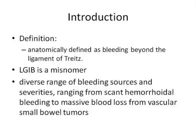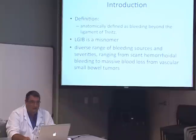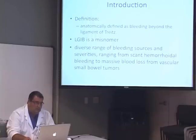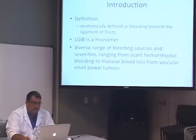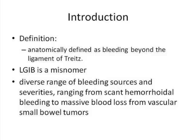The first thing is defining what persistent lower GI bleeding is. Lower GI bleed is anatomically defined as bleeding beyond the ligament of Treitz. Lower GI bleed is a misnomer because it's not really lower GI bleed if it's in the proximal duodenum, but the manifestation is very similar whether you bleed from the mid-duodenum, the distal ileum, or from the colon. There is a diverse range of bleeding sources and severities, from hemorrhoids to massive blood loss from vascularized small bowel tumors.